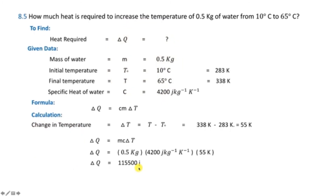Problem 8.5: How much heat is required to increase the temperature of 0.5 kg of water from 10°C to 65°C? Mass m = 0.5 kg, initial temperature = 10°C = 283 K, final temperature = 65°C = 338 K. The specific heat of water c = 4200 J/kg·K. Using Q = mcΔT: ΔT = 338 − 283 = 55 K. So Q = 0.5 × 4200 × 55 = 115,500 J.